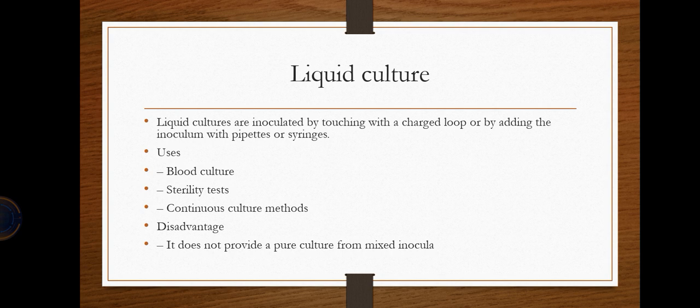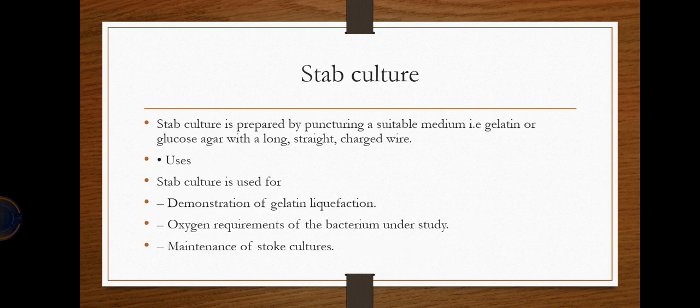Liquid culture involves inoculating with a charged loop or adding inoculum with pipettes or a syringe. It is used for blood culture, sterility testing, and continuous culture methods. A disadvantage is that it does not provide pure culture from a mixed inoculum.